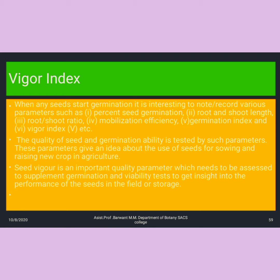Next is the vigor index, which is the most important concept related to biostatistics of germination. When any seed starts to germinate, we record various parameters such as percent seed germination, root-shoot length, shoot length ratio, mobilization efficiency, germination index, vigor index, etc. The quality of a seed and its germination ability are tested through such parameters, which give an idea about seed sowing for raising a new crop in agriculture.